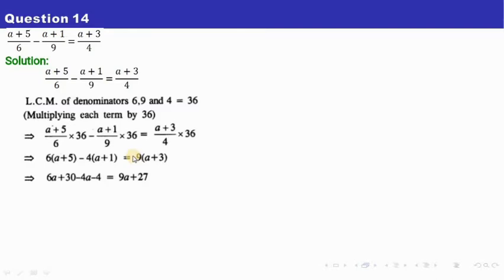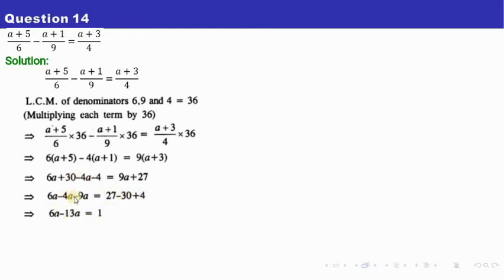We do not have minus here, so the sign remains the same. So 9 times a is 9a and 9 times 3 is 27. Our next job is to take all the unknowns to the left hand side. So 9a comes over and becomes minus 9a. Minus 4 goes over and becomes plus 4, and plus 30 goes over and becomes minus 30. Remember: when we are adding terms with the same sign they get added — we are not multiplying, so the sign stays as it is.